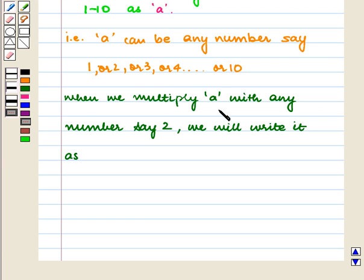Also, when we multiply A with any number, say 2, we will write it as 2 times A.